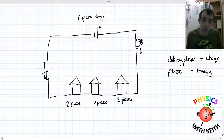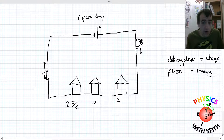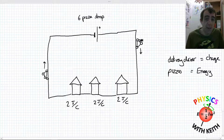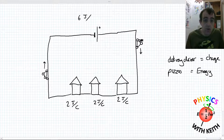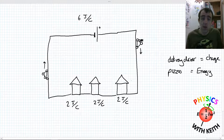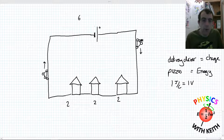These delivery drivers dropping off pizzas are actually dropping off energy. Each drop-off delivers an amount of energy — measured in joules — per unit charge — measured in coulombs. So for example, two joules per coulomb are being dropped off at each house. And what the shop picks up at the top end is six joules of energy per delivery driver — that's the whole point of the shop. One joule per coulomb is one volt — that's what potential difference is.